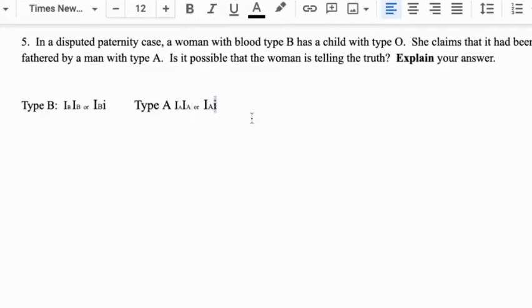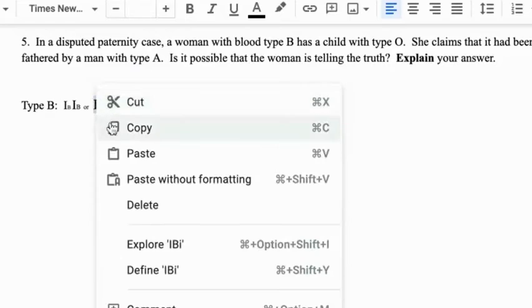So is it possible that a woman with type B blood and a father with type A blood could have a child with type O? It's possible, right? Only in one condition though, they must both be heterozygous, right?